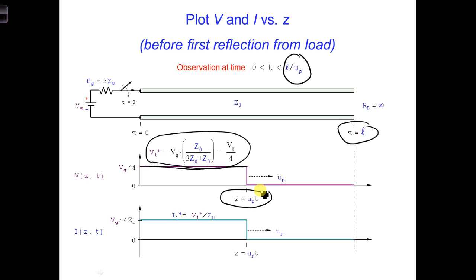When plotting the current, the waveform looks the same and has propagated the same distance. The only difference is that the amplitude is scaled by Z naught. So I1 plus equals V1 plus over Z naught.